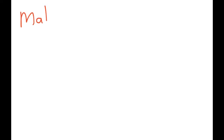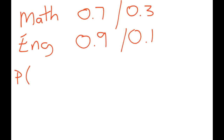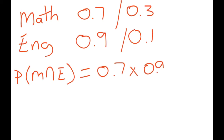Another type of question involves complements. Suppose the chance of passing math is 70% (0.7), so there's a 30% chance to fail. For English, you have a 90% chance of passing, so a 10% chance of failing. What's the probability you pass both? You multiply: 0.7 × 0.9 = 0.63.